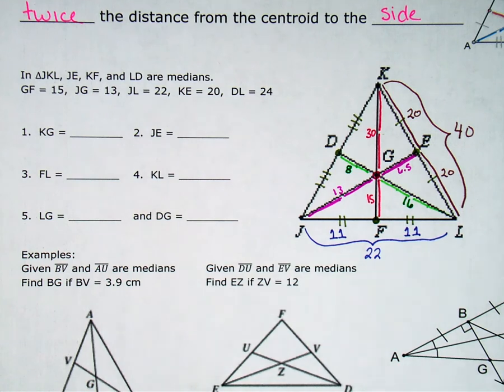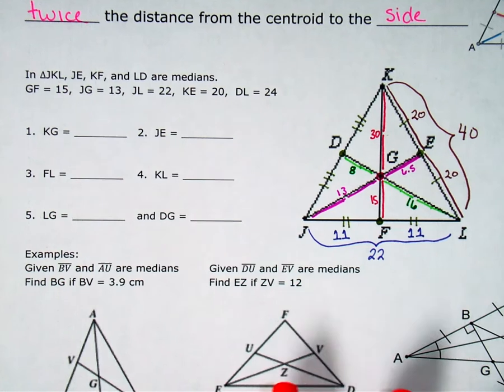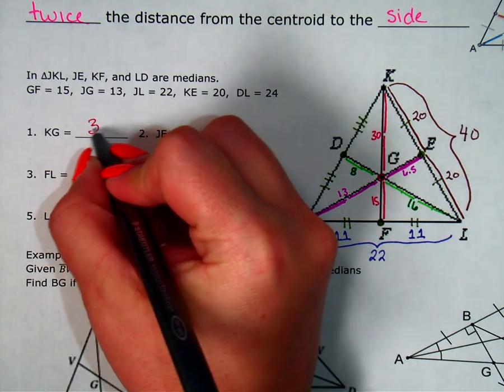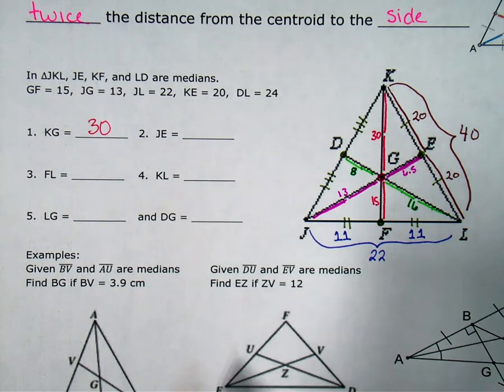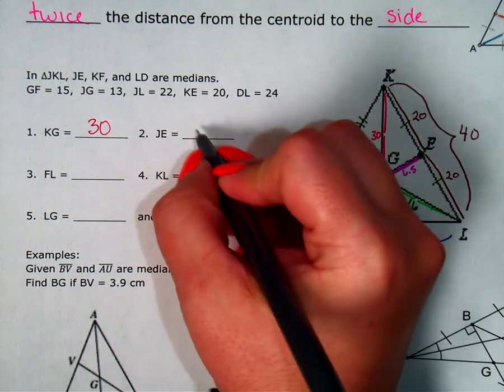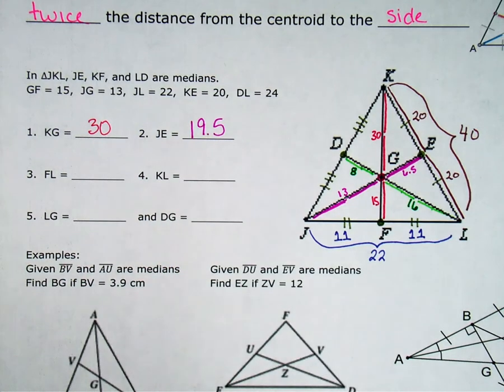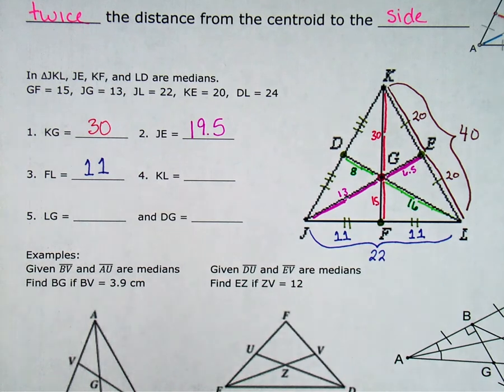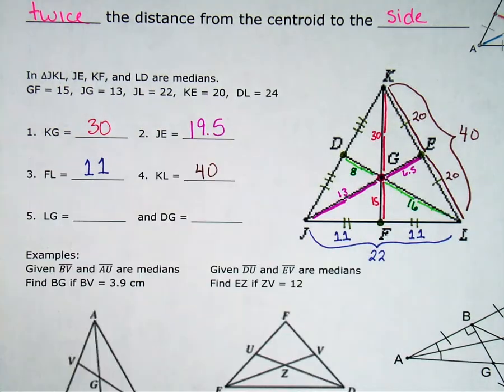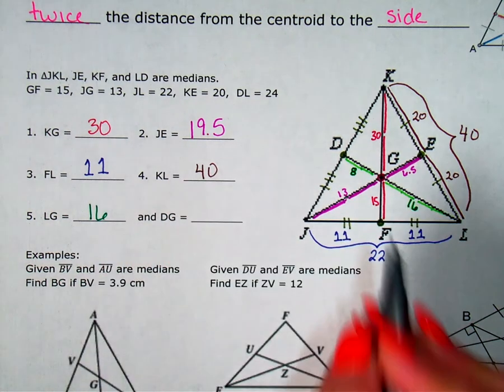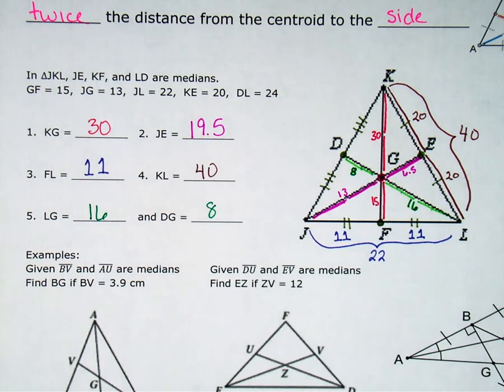So, now that we filled out the whole thing. Which, we wouldn't have had to start with. We could have just said KG. Let's see if we can figure it out. But, I bet this goes really fast and easy now. KG. Well, let's look. K to G. Oh, that's 30. Easy peasy. JE. From J to E. So, the whole thing, I have to go 13. And then I have to go another 6.5. So, that's going to be 13 plus 6.5, which is 19.5. And then F to L. F to L is 11. And then FL, that whole piece there, we already found to be 40. Then, LG, L to G, is 16. And DG is 8.